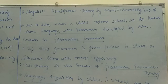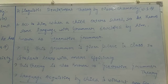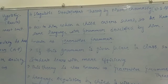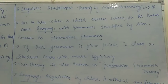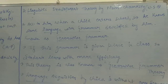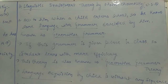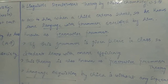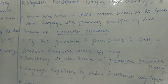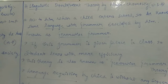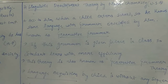Now let's talk about the next theory — the Linguistic Development Theory by Noam Chomsky, abbreviated as NOM. He is from the USA. Linguistic means related to language. When a child goes to school, the language they bring comes from their mother tongue. The grammar of the mother tongue — whether it's Marathi or any other language — shapes the child's grammar.